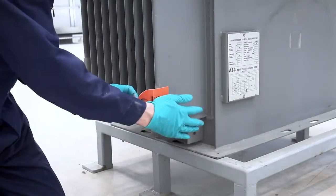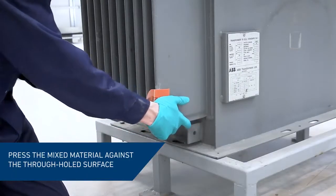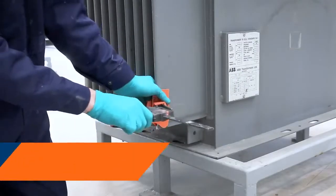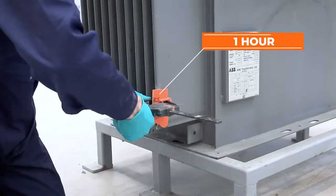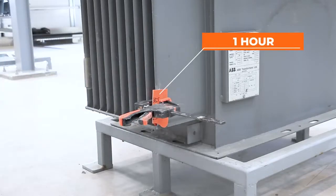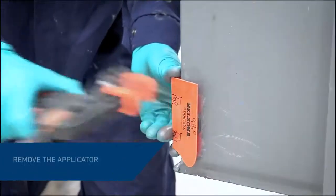Using a Belzona applicator, press the mixed material into the damaged area and apply pressure until the product has hardened. After approximately one hour, remove the applicator.